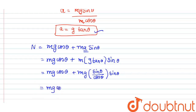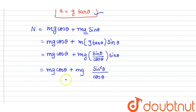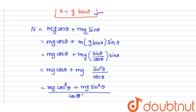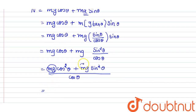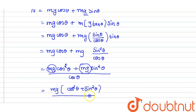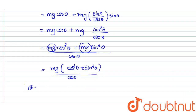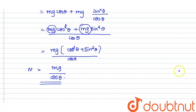Multiplying through: N = mg cosθ + mg sin²θ / cosθ. Taking mg/cosθ as a common factor: N = mg(cos²θ + sin²θ) / cosθ. Since cos²θ + sin²θ = 1, we get N = mg / cosθ.